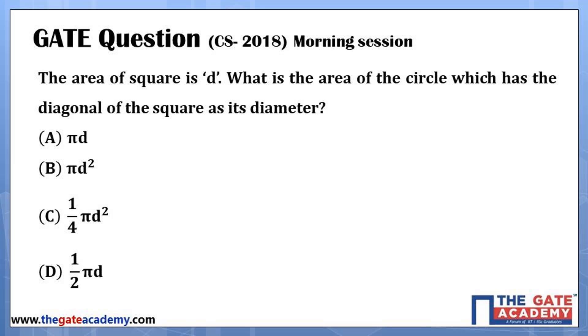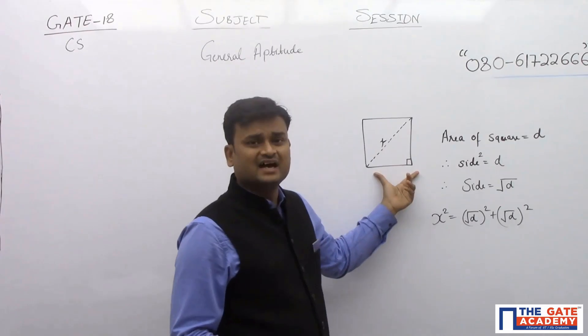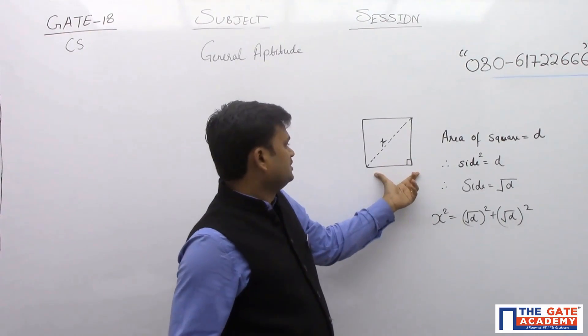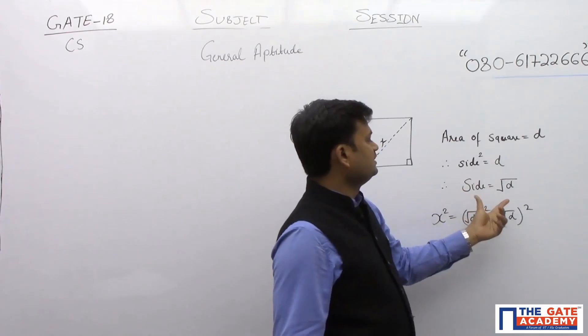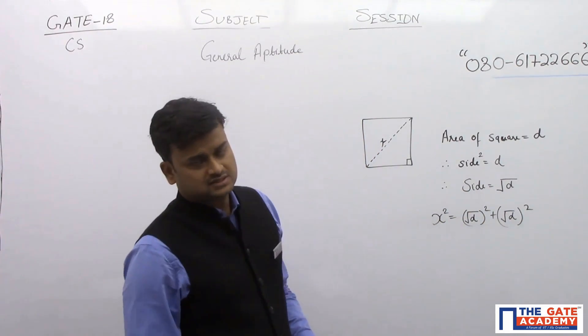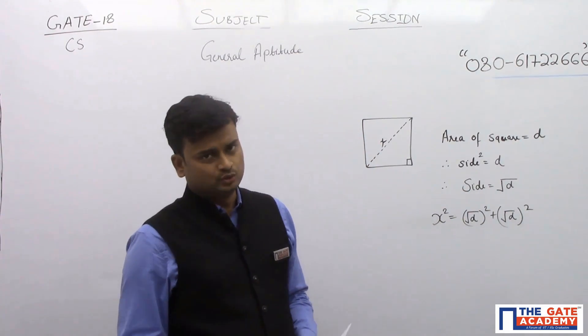So this is one square and its area is D. So area of a square is D, that means side will be equal to root D, side of this square will be equal to root D.